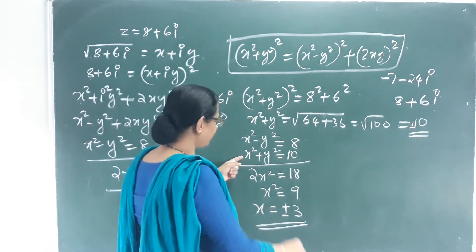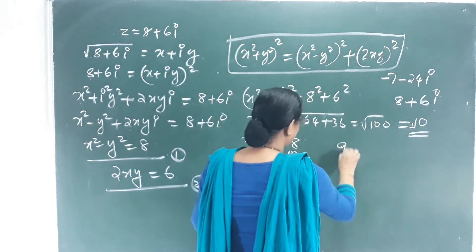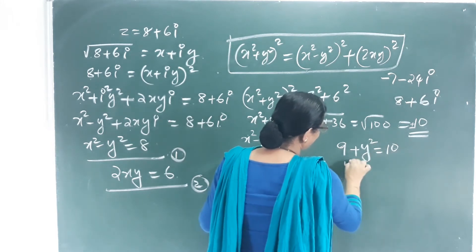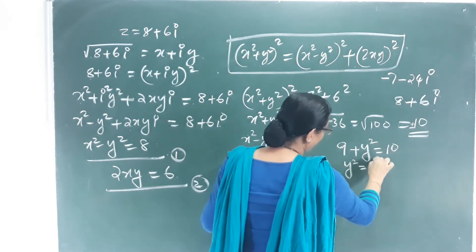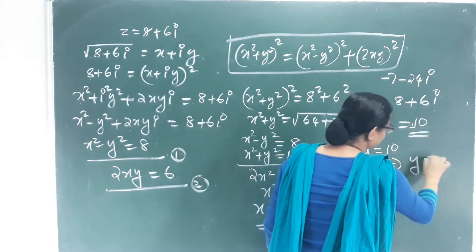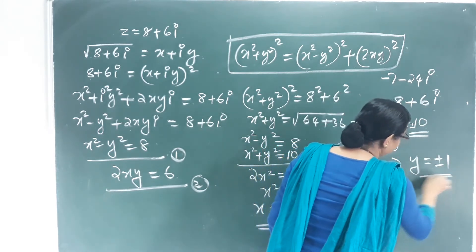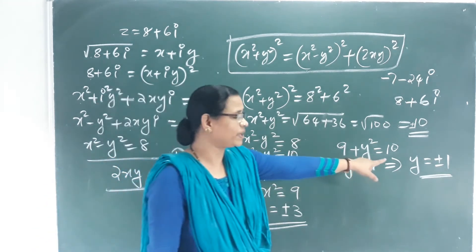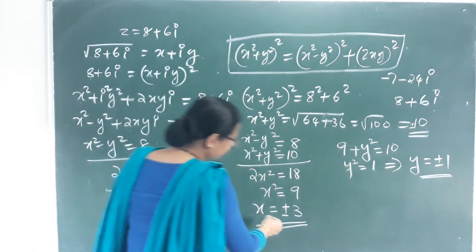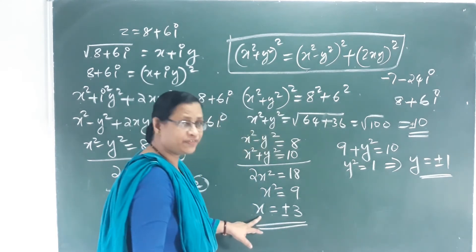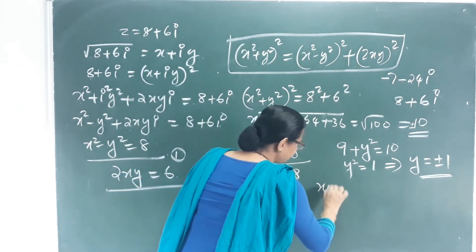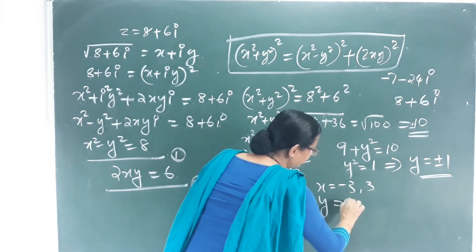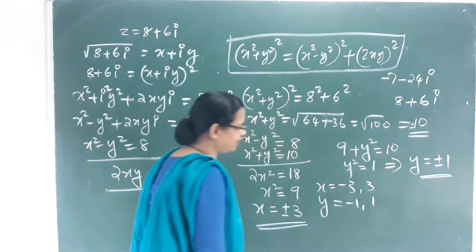Substituting x² = 9 into x² + y² = 10: 9 + y² = 10, so y² = 1, which gives y = ±1. So x = ±3 and y = ±1, giving four possible combinations.